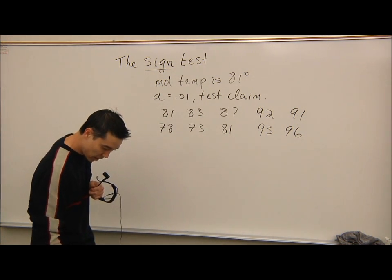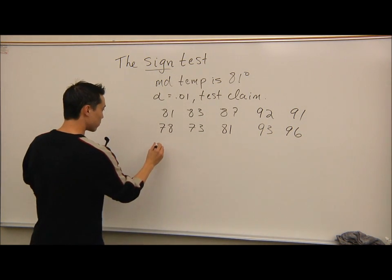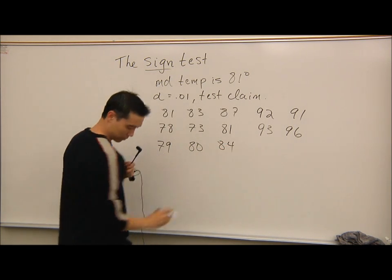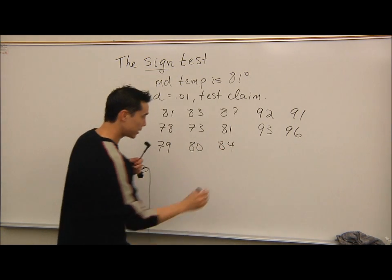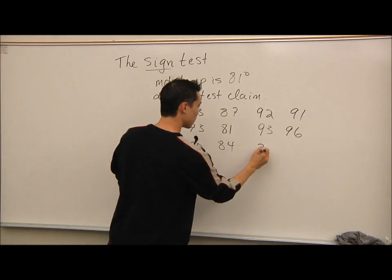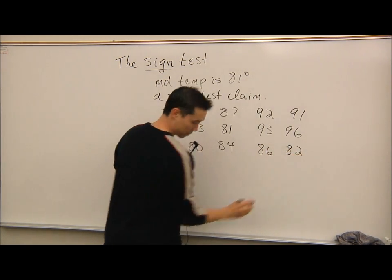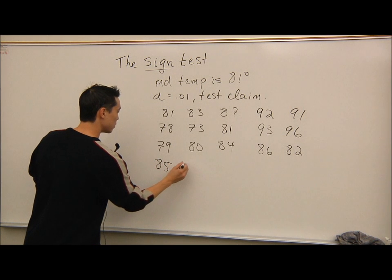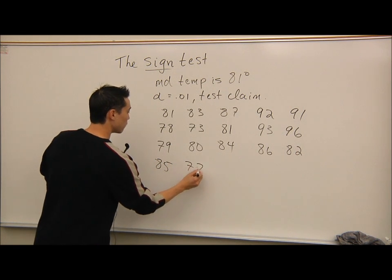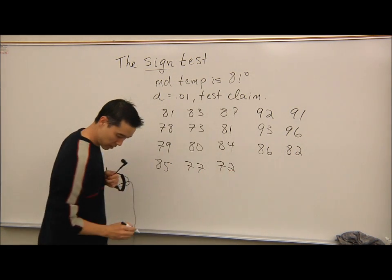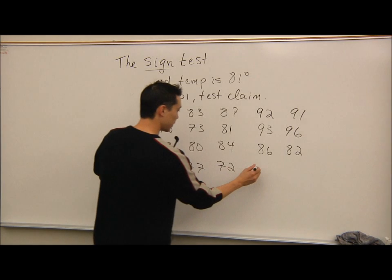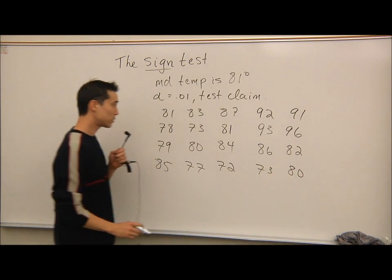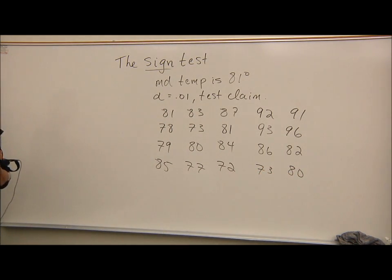Continuing with the remaining temperatures: 79, 80, 84, 86, 82, 85, 77, 72, 73, and 80. So these are the 20 days that we recorded the temperature.